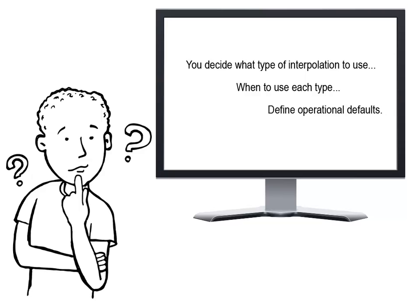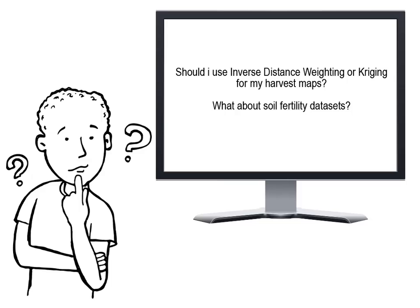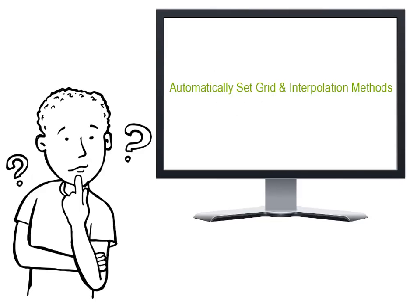The type of interpolation and parameters for each are totally up to you. You can even define operational defaults if you want to use specific interpolation methods for different operations. But what if you don't want to have to remember what statistical methods should be used for your yield maps versus your fertility data? In cases where you simply want SMS to use the right method based on the data you're working with, without modifying any settings, you have the option to have SMS automatically set the gridding and interpolation values for you.